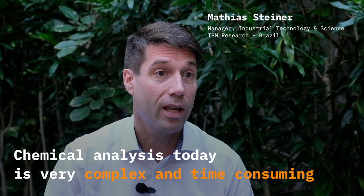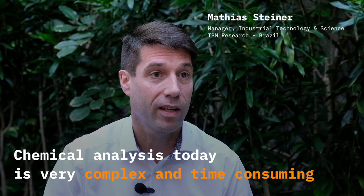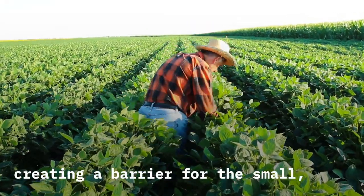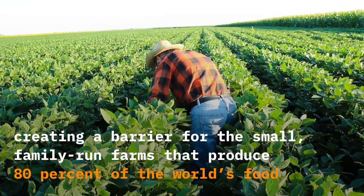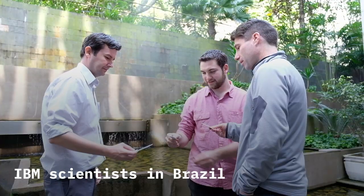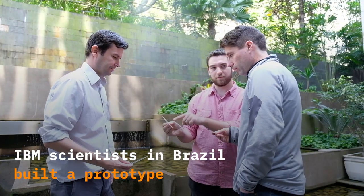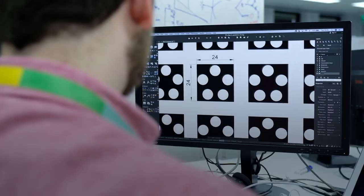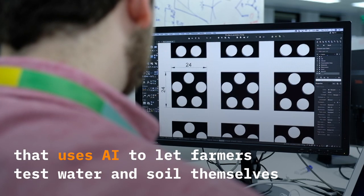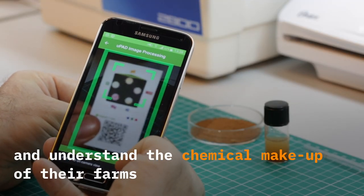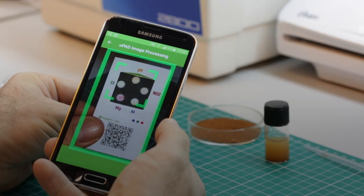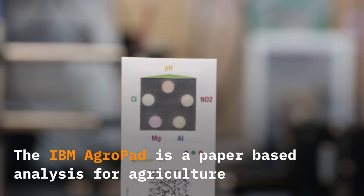Chemical analysis today is very complex and time-consuming. The IBM AgroPad is a paper-based analysis for agriculture.